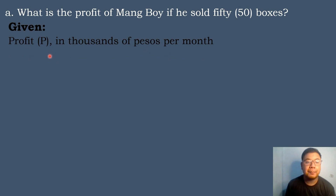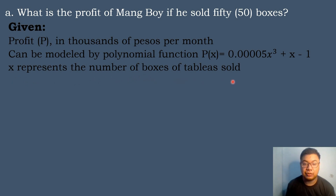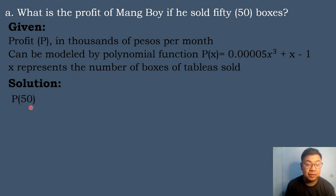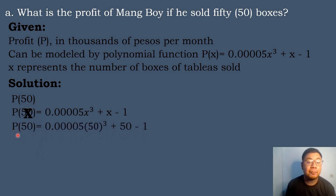Let's solve for the first question, letter A: what is the profit of Mangboi if he sold 50 boxes? The given profit P is in thousands of pesos per month, modeled by P(x) = 0.00005x³ + x − 1, where x represents the number of boxes of Tableya sold. We will evaluate the polynomial function at P(50), since 50 is the number of boxes sold. Substituting: P(50) = 0.00005(50)³ + 50 − 1.